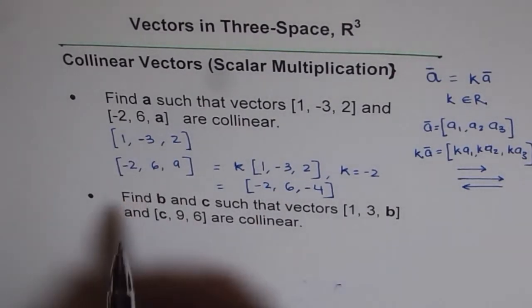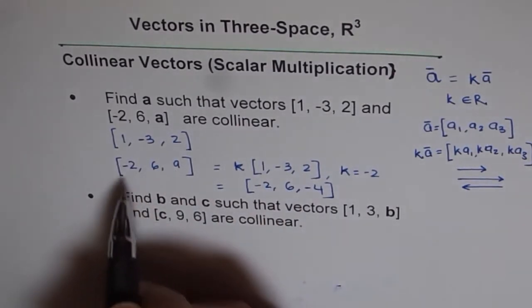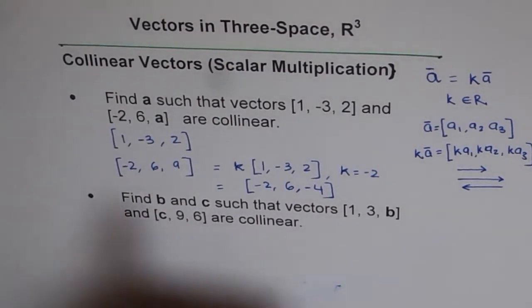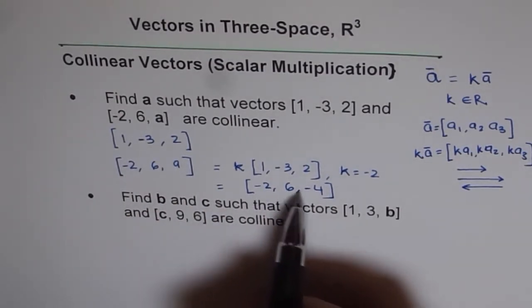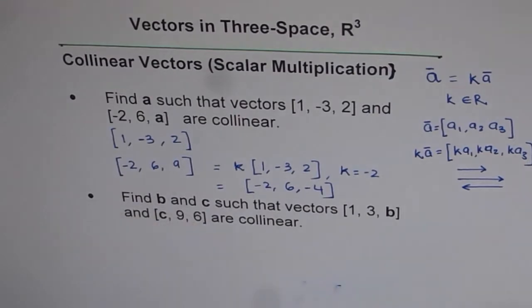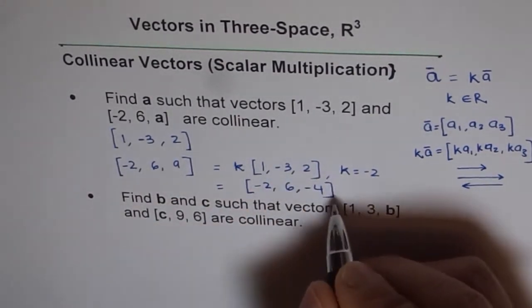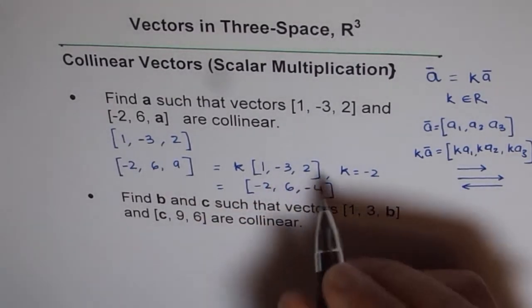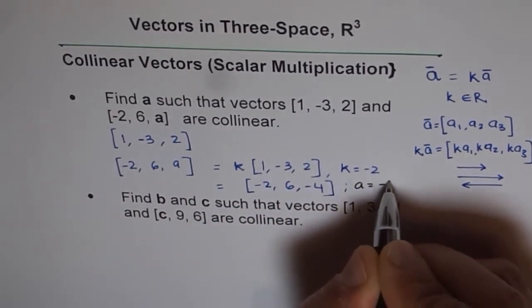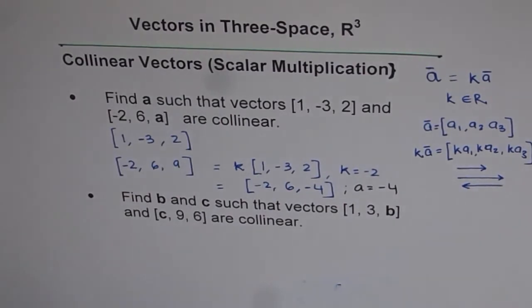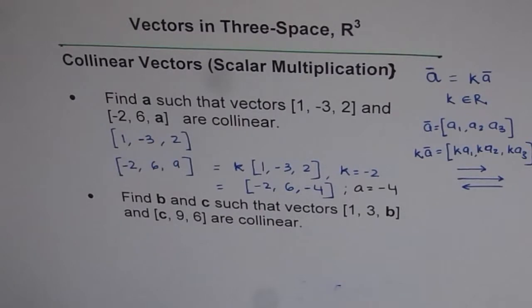By comparison, [-2, 6, a] matches [-2, 6, -4], which clearly implies that a, the direction number along the z-axis, is equal to -4. That is how we can find the direction number of a vector when we are given it is parallel to some other vector.